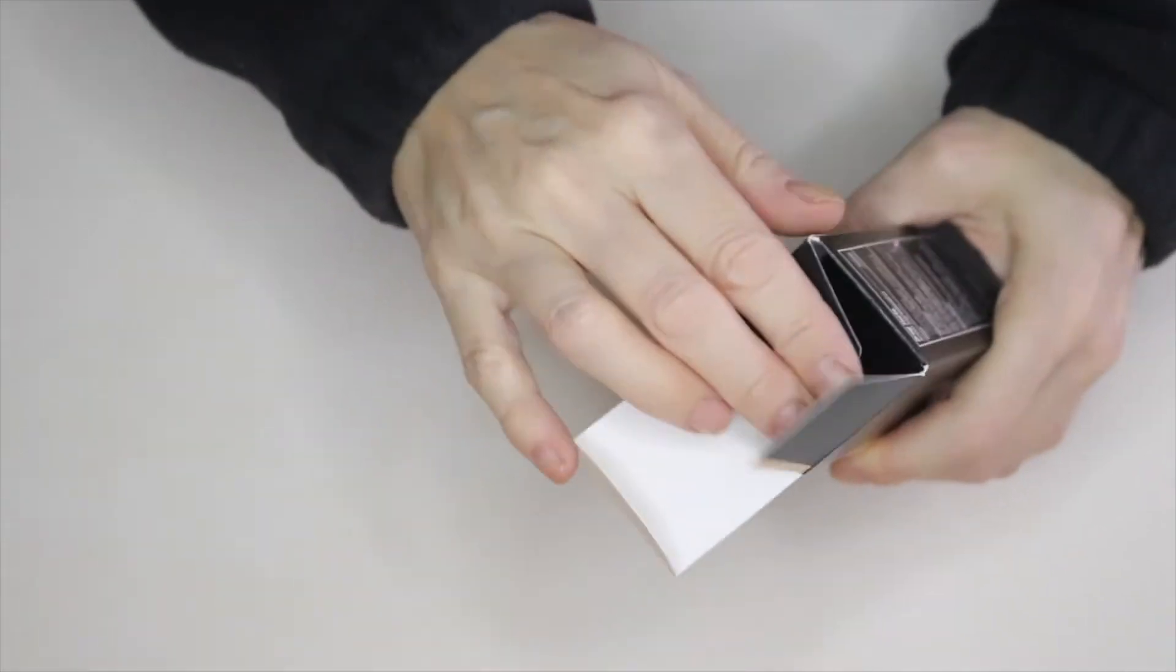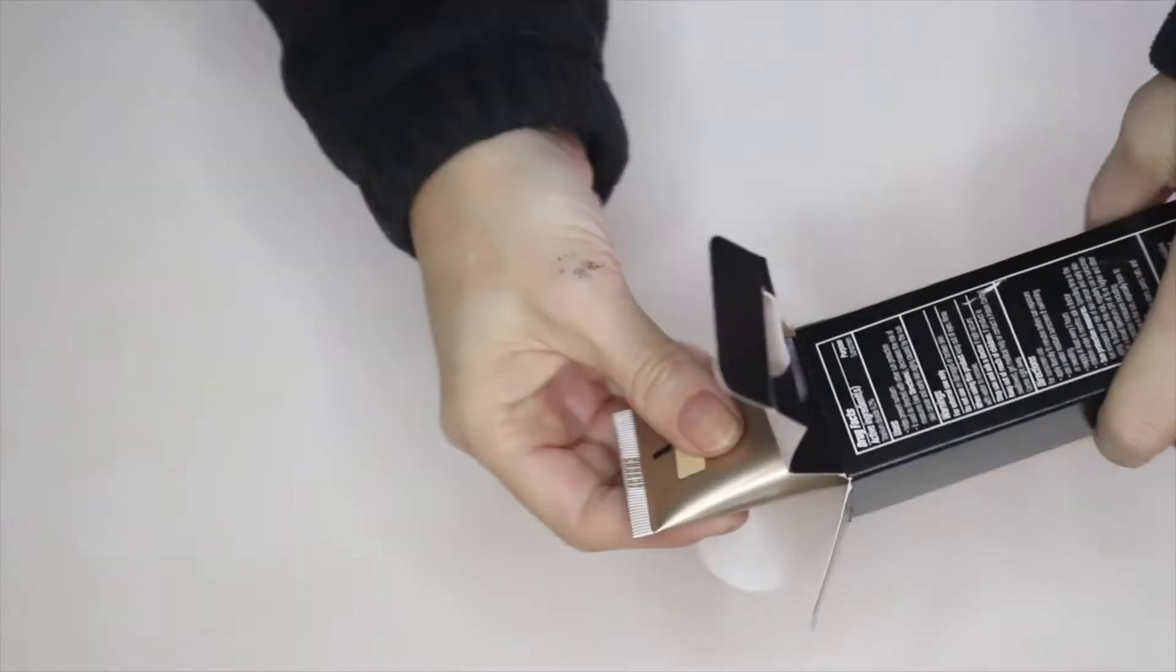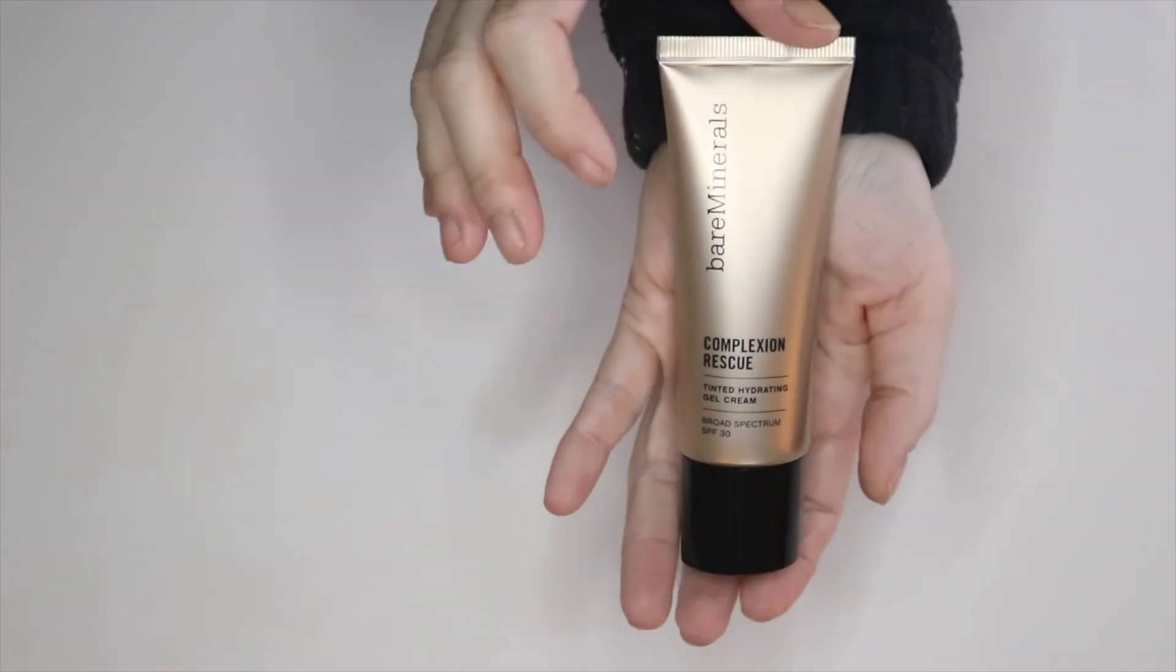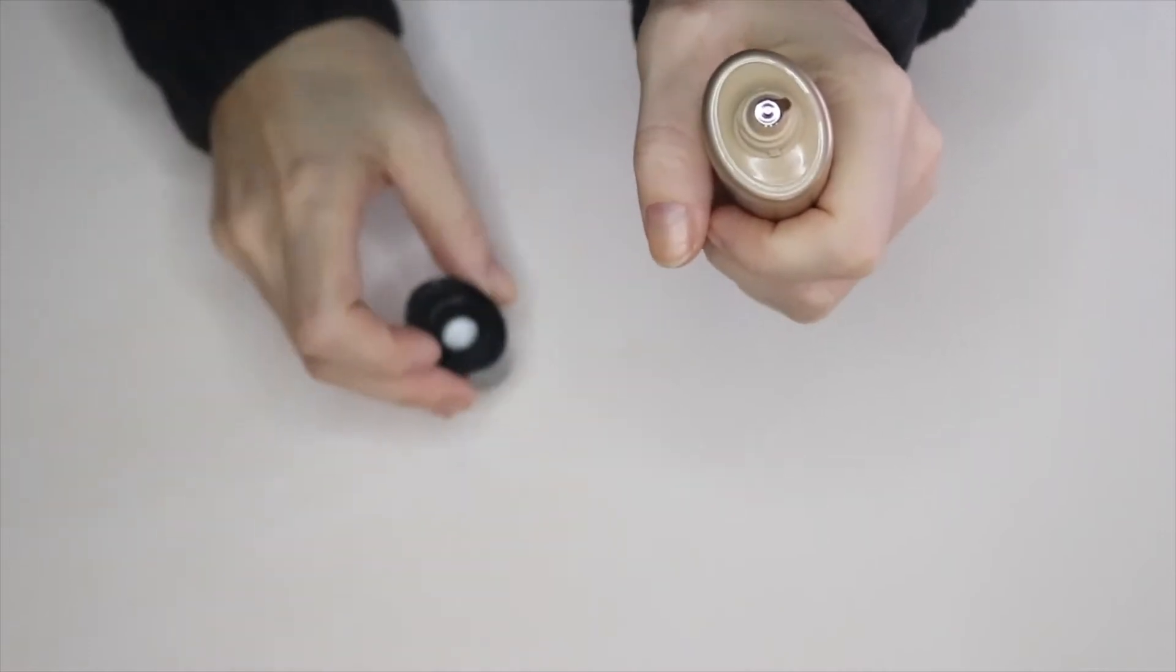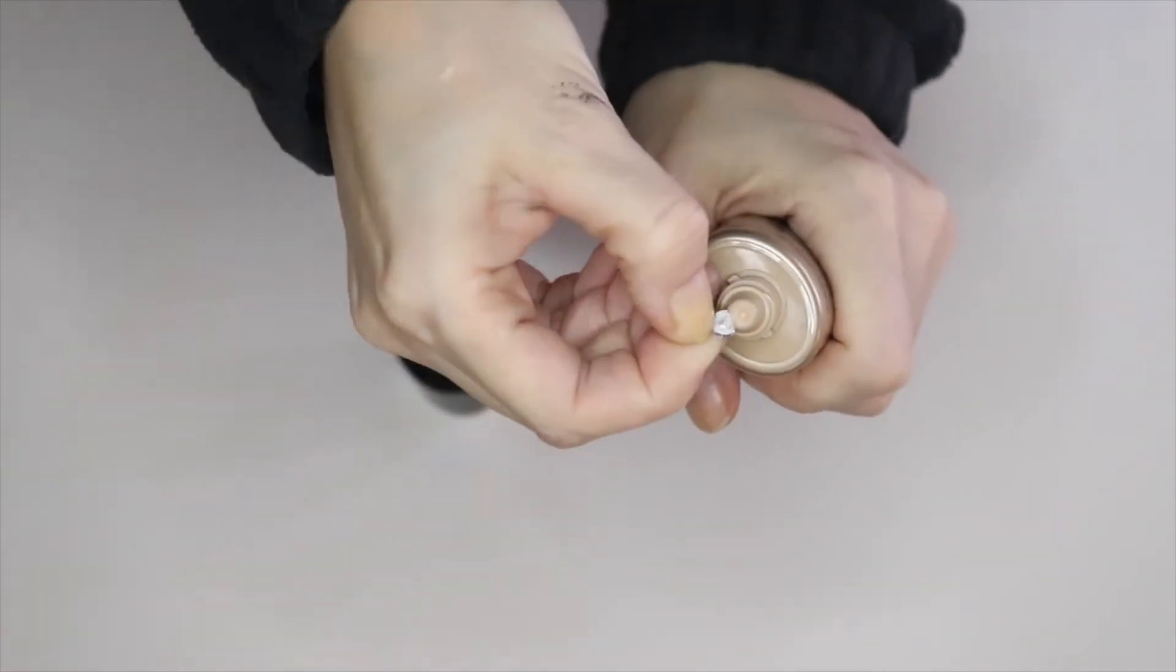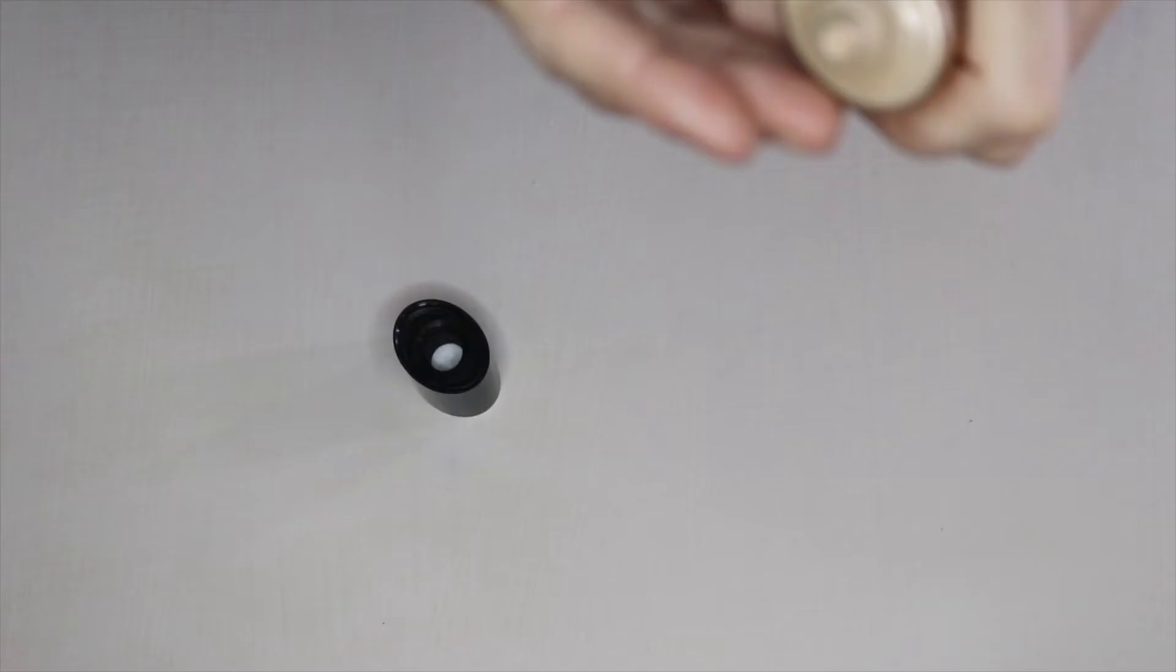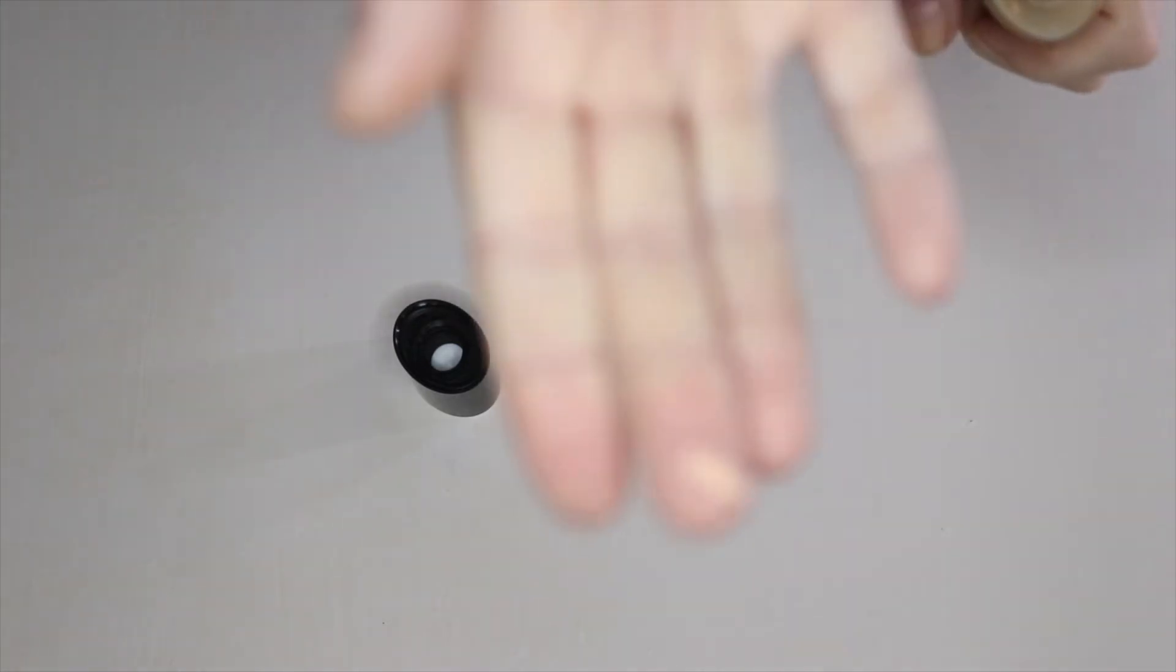The first thing I have to show you is the Complexion Rescue, which is a primer. It comes in this nice little tube. Let's go ahead and take the lid off and the little top piece out. That's really nice so you can make sure that nobody else has got into it. We'll put a little bit on our finger here and see what it looks like.